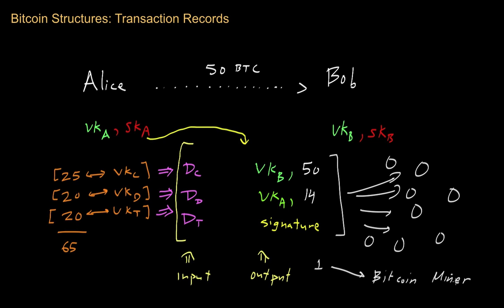But what Bob doesn't know yet is whether Alice tried to previously assign those exact same coins to somebody else. For example, maybe Alice also tried to send these same Bitcoins to a friend named Eve — a double-spend attempt. Even though all transactions are made public in Bitcoin, we still need a decentralized mechanism that does not require a trusted third party for agreeing on the order in which transactions actually took place, so that we can resolve any disputes about someone trying to double-spend their coins.